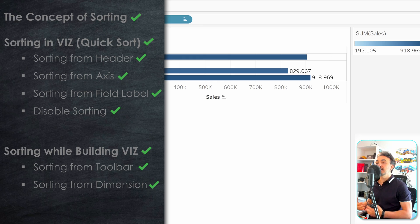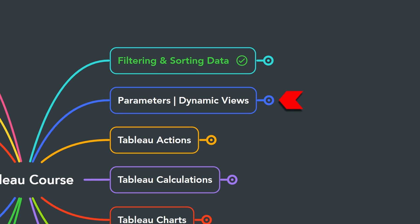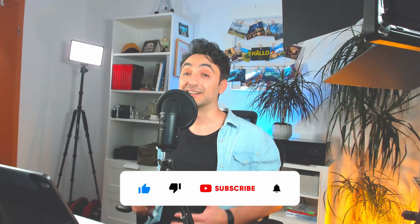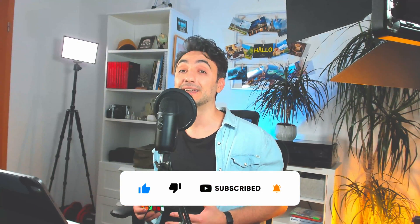We've now covered everything about sorting data in Tableau — from the user's perspective with quick sorts, and from the developer's perspective while building views. In the next section, we'll learn about Tableau parameters to add dynamics to our visualizations. If you like the content, please like, comment, and support the channel — it really helps the YouTube algorithm. Thank you for watching and see you in the next video.